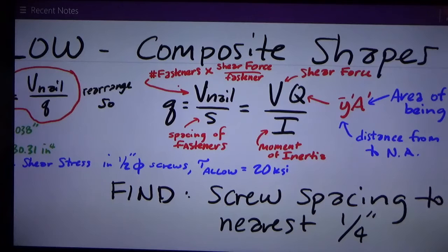For V nail, what that really means, that's unfortunately named. And it's really the amount of shear force you have per fastener. And so it is really the number of fasteners involved, connecting the part that you're connecting, times the shear force provided by each fastener. So we'll talk about that in this example. S on the bottom is the spacing of the fasteners. And that's equal to this other formula.